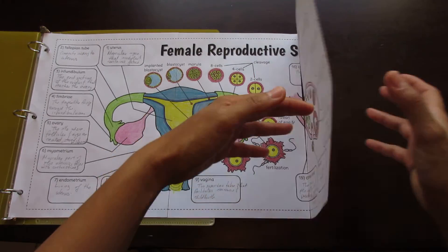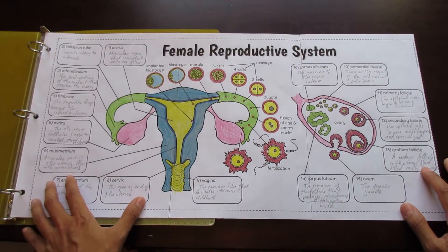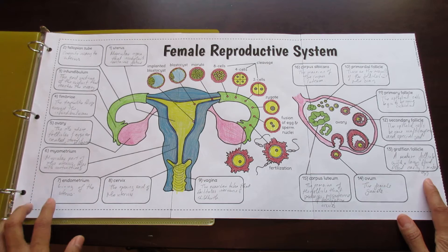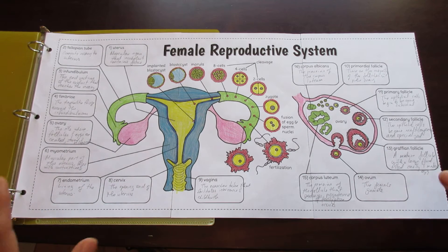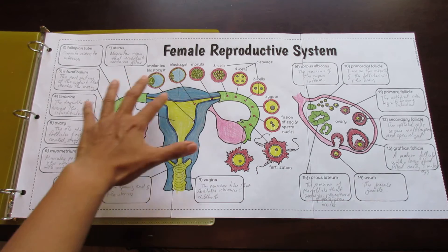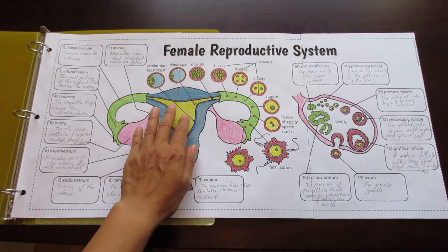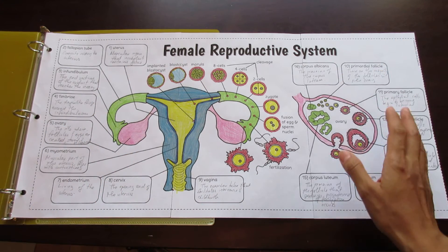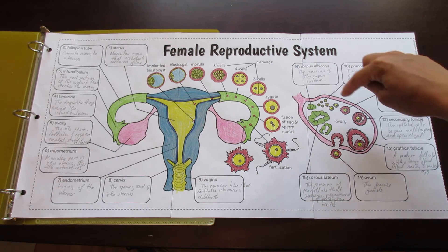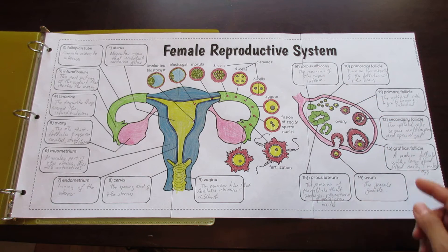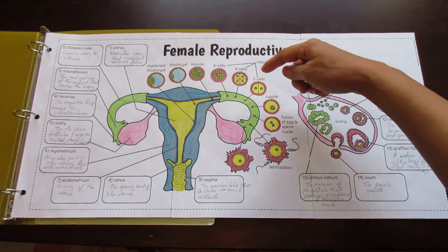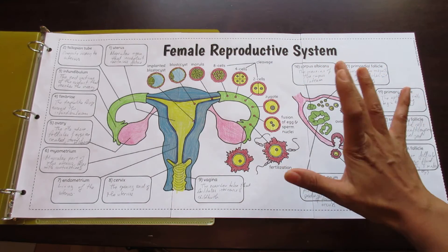If you want to make an interactive notebook foldable, you would just cut along the dashed lines to make this a smaller foldable. This diagram contains several features: the overall female reproductive system, and to the right a blow-up of the ovary where you can see the events taking place during a cycle. I've also included the different stages that occur after fertilization, which students find very interesting.